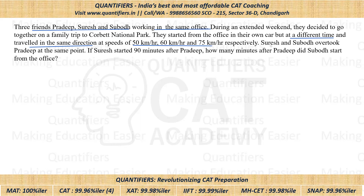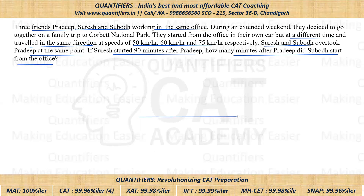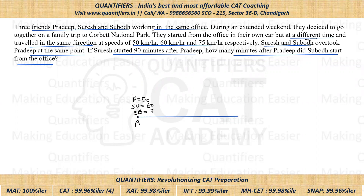Further, it is given that Suresh and Subodh overtake Pradeep at the same point. Suresh started 90 minutes after Pradeep. We have to find how many minutes after Pradeep did Subodh start. They all started from point A. They start at different times and their speeds are also different — Pradeep's speed is 50, Suresh's speed is 60, and Subodh's speed is 75.